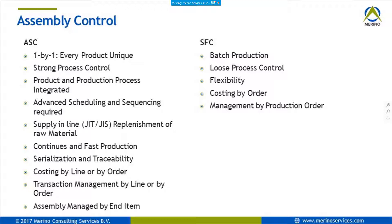With SFC you get a lot of flexibility and all transactions are done by the production order — we have production order costing and report by operation by order. With assembly control, we have the option not to work in an order-based mode. We can work by line, by line station, and do costing by line where all transactions are recorded by line station — pretty big differences between assembly control and SFC.